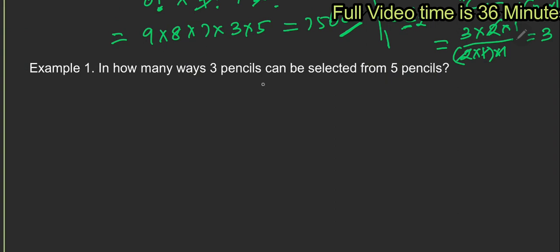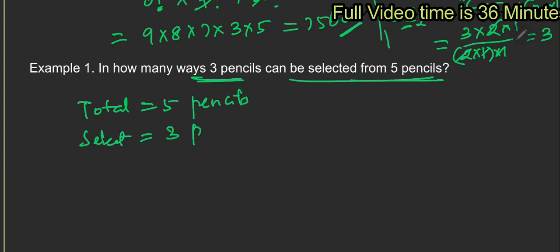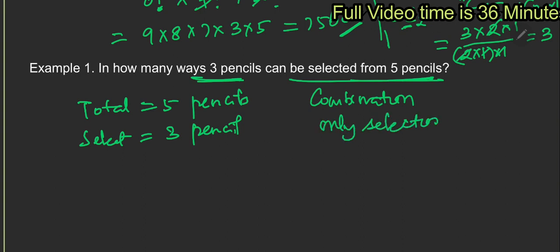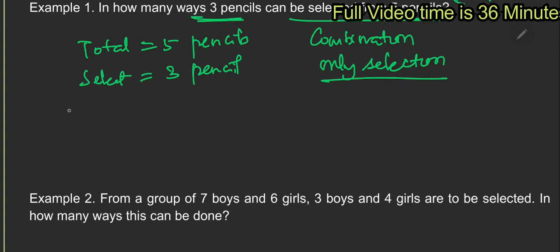Next problem: in how many ways can 3 pencils be selected from 5 pencils? In total there are 5 pencils, and we select 3 pencils. Since we are only selecting — not arranging in any order — this is a combination problem. The combination formula is NCR = n factorial divided by r factorial into n minus r factorial.